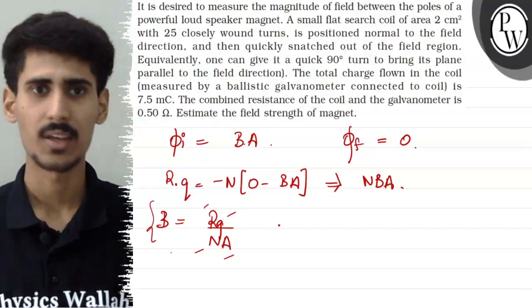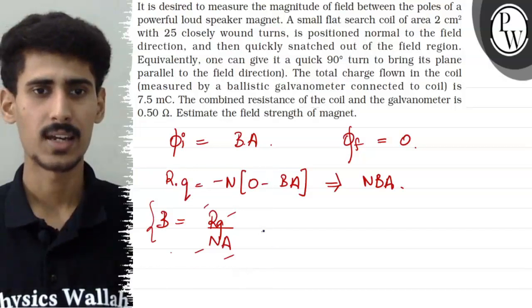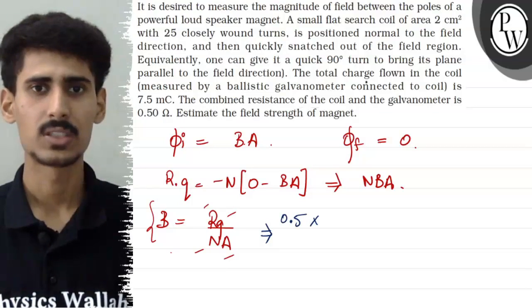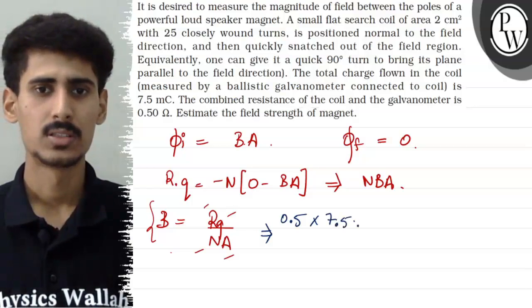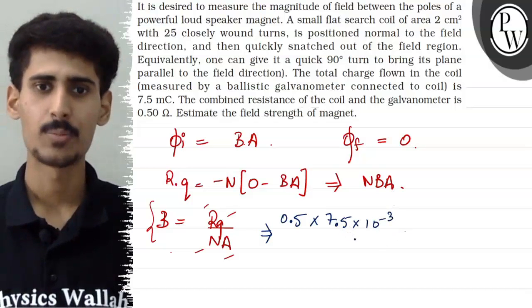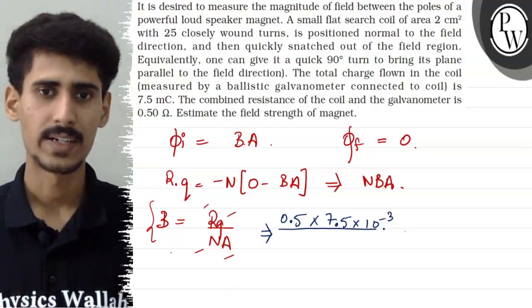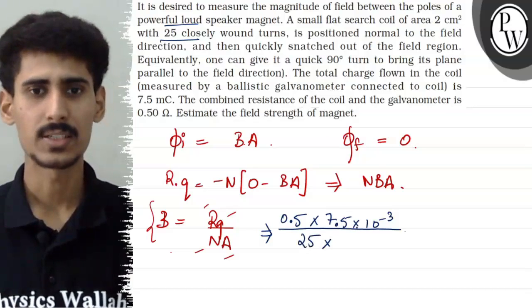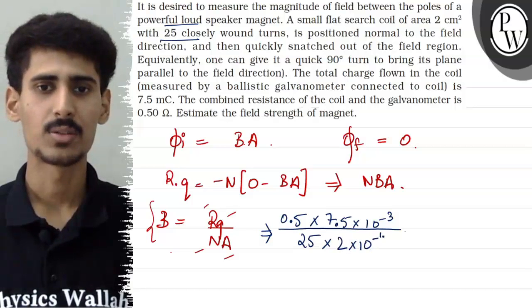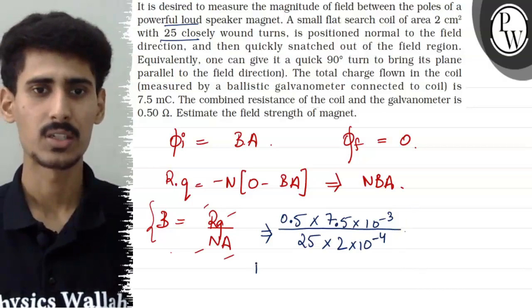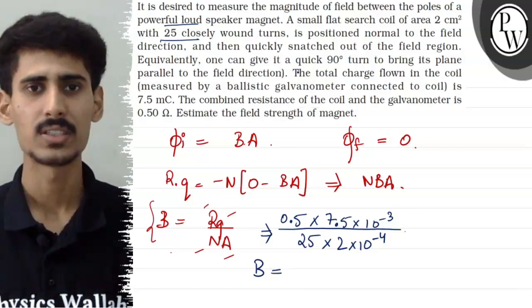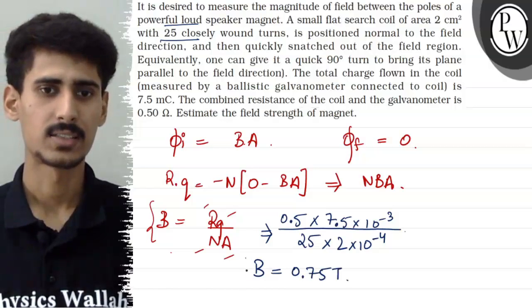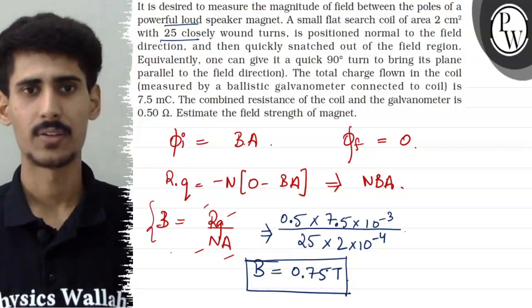So here we can solve for B. B = RQ / (N × A). Substituting values: resistance is 0.5 ohms, charge is 7.5 millicoulombs = 7.5 × 10⁻³ coulombs, number of turns is 25, and area is 2 cm² = 2 × 10⁻⁴ m². Upon solving the right-hand side, we get the magnetic field equal to 0.75 Teslas. So the final answer for this question is 0.75 Teslas.